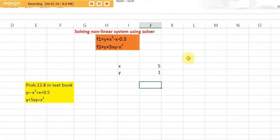Now at these guess values of x and y, let us calculate the value of functions f1 and f2. f1 equals y plus x squared minus x minus 0.5. This is 25.5.